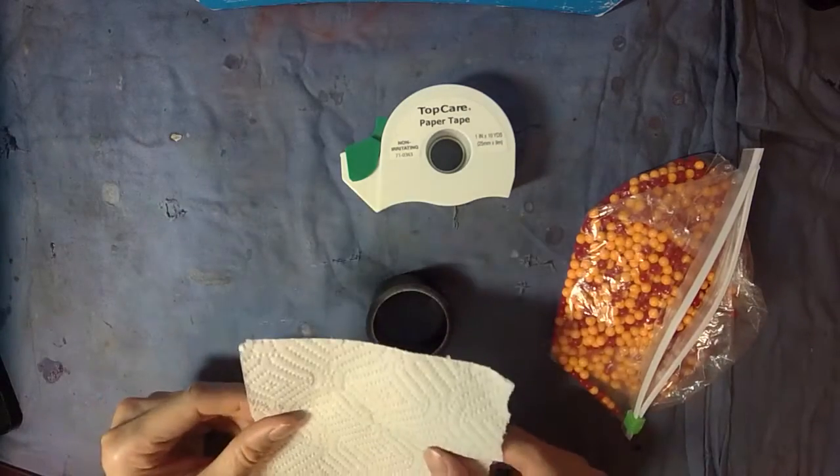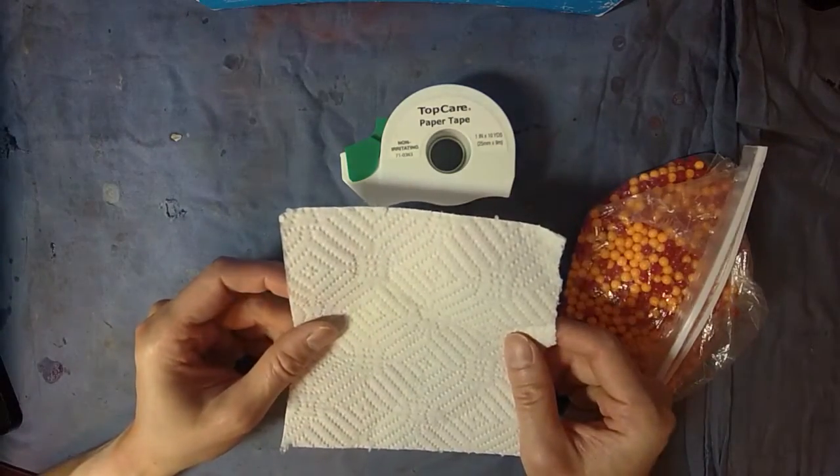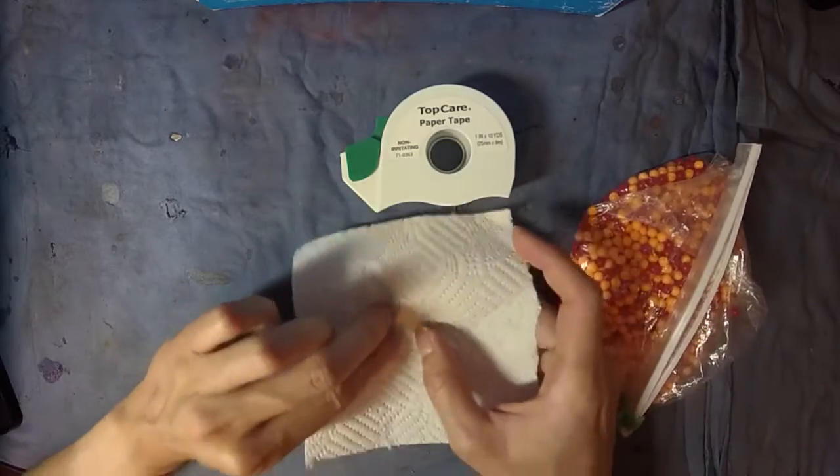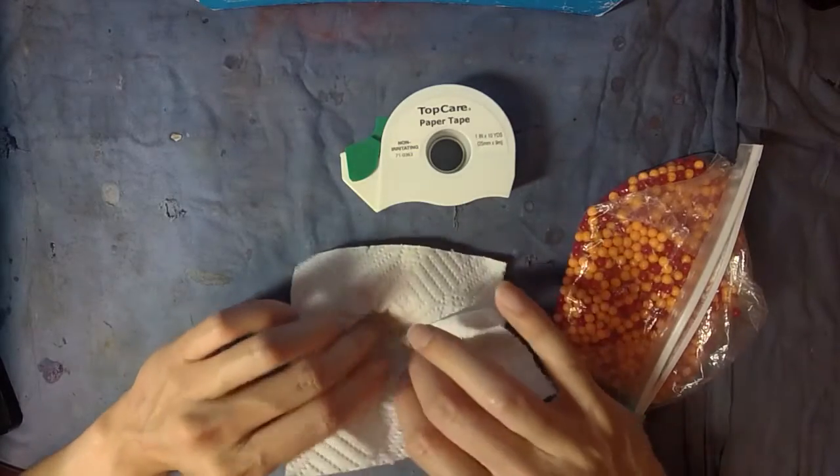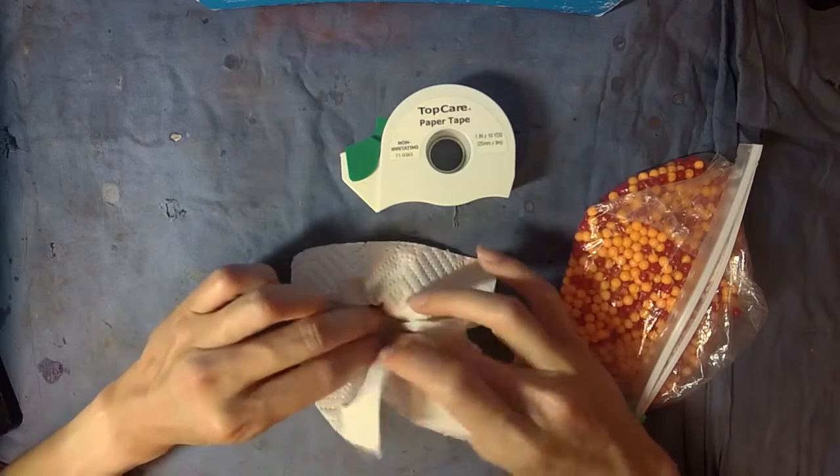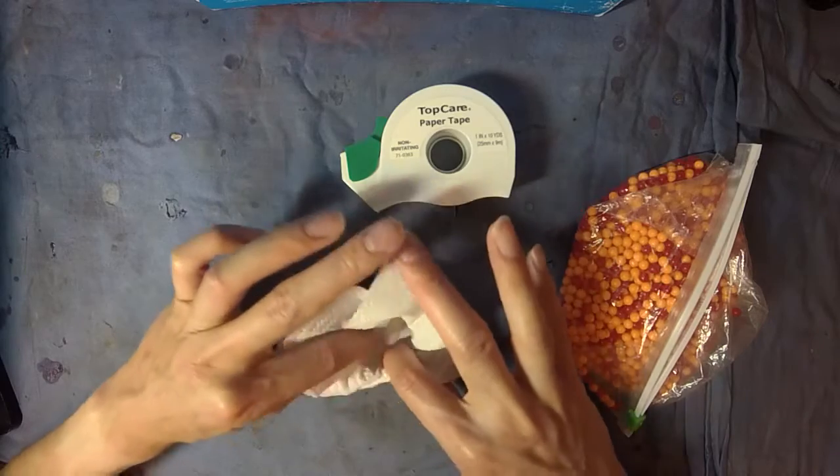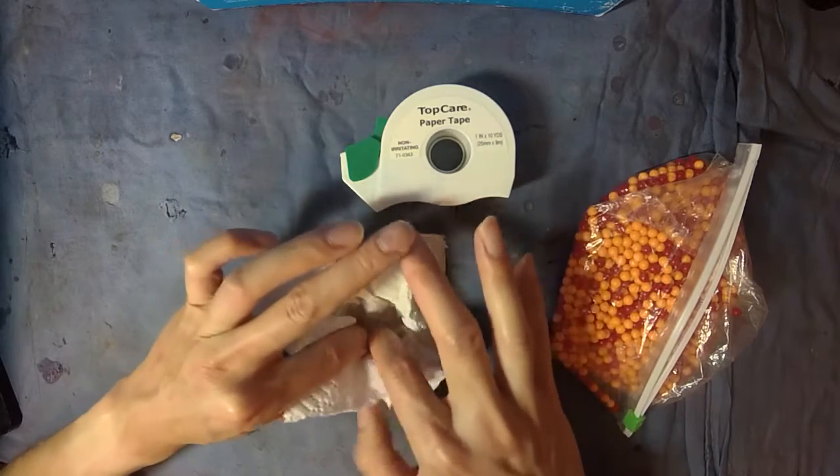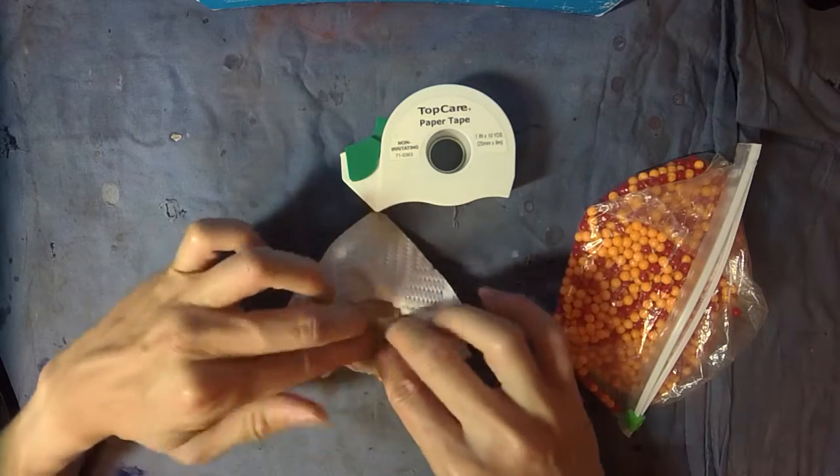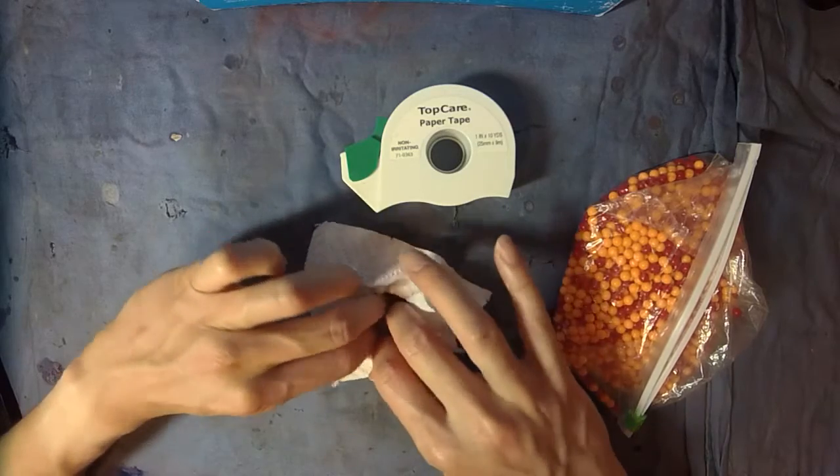Now first, you need to put the paper towel inside the PVC pipes, like so. And try to use your finger to compact it.